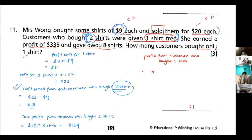Equals to, you take the $335. This is my total profit. $335, you take away what I know from the two t-shirt customer, $104. Equals to $231.